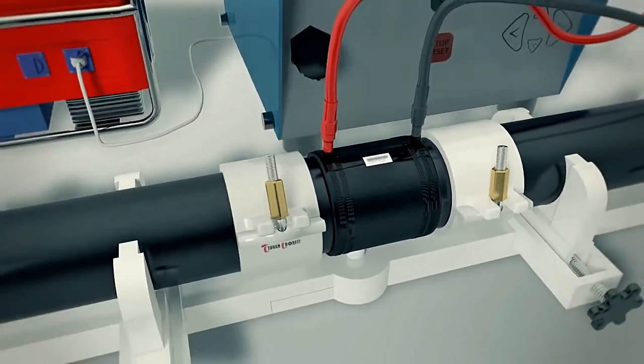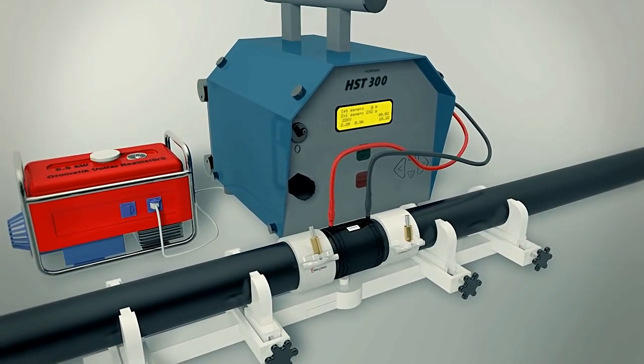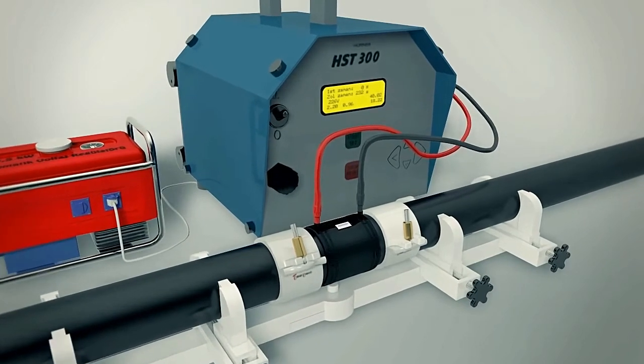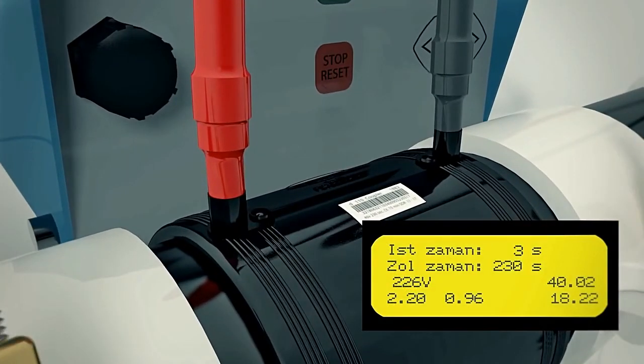For the duration of fusion, the joint is sensitive and should be left undisturbed. Leave pipe centralizer and re-rounders in place. At the end of fusion, you may carefully remove the terminals, making certain not to move the fitting.